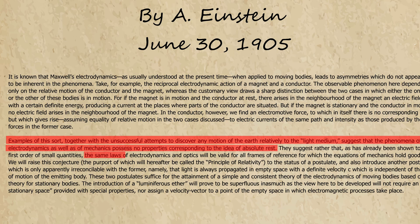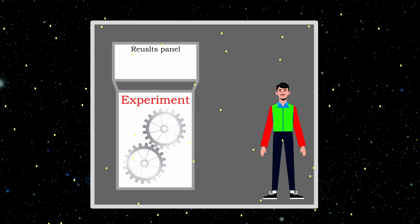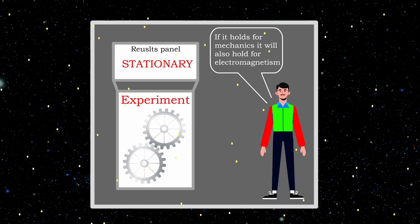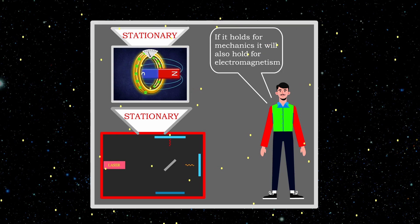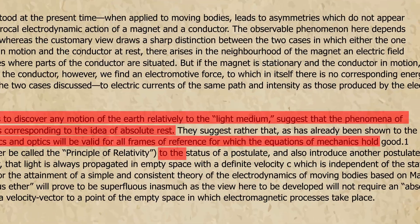Einstein further argued that experiments like this rather suggest that the same laws of electrodynamics and optics will be valid for all frames of reference for which the equations of mechanics hold good—which simply means that if you work with frames of reference where Galilean relativity for mechanical processes hold, it will also hold for electrodynamics and optics. And then he raises this statement to a status of a postulate, creating the first out of two postulates of special theory of relativity.